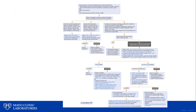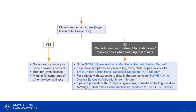Once geographic location has been established, the next part of the algorithm is based on the presence or absence of an erythema migrans, or bullseye rash, which develops at the site of a tick bite in roughly 70 to 80 percent of patients recently infected with Lyme disease. For individuals who develop this rash, testing for Lyme disease is not indicated as it is a pathognomonic sign of infection — the recommendation is to treat for Lyme disease and monitor for symptoms related to other potential tick-borne pathogens. If there is no erythema migrans rash, for symptomatic patients we recommend consideration of empiric treatment for ehrlichiosis and anaplasmosis while awaiting test results.